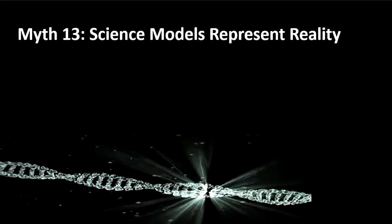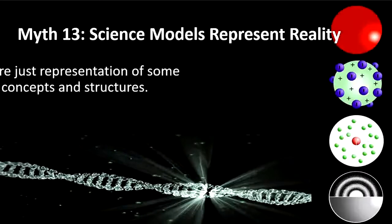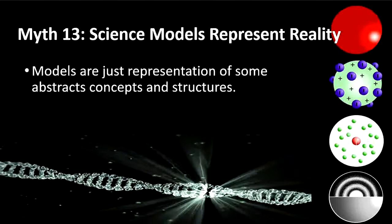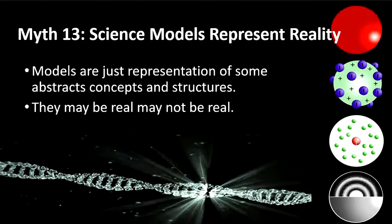The next myth is that science models represent reality. Our focus in science classrooms is sometimes on developing models and asking students to create models, but science models are just a representation — they are not real. They are just a representation of some abstract concepts or structures. Consider the atomic model: starting from Thomson's model, then Rutherford's model, then Bohr's model — the whole concept of the atom changed with each model. One model exists until a better model comes along, so we should tell students that a model may be real or may not be real.